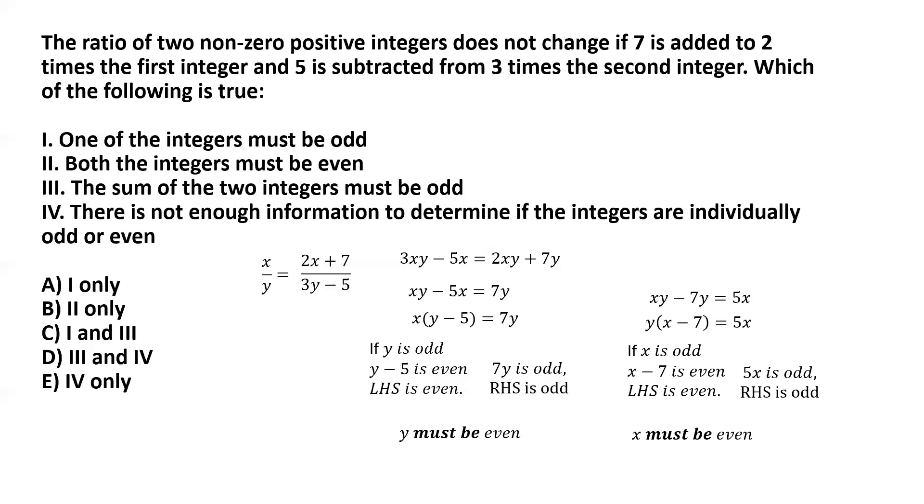The conclusion is that both integers x and y must be even numbers. So the correct option is option B, which states that only statement 2 is correct. X and y being both even, their sum must also be even, so we can reject statement 3, which states the sum must be odd. Going through all the statements, only statement 2 is correct. So the correct answer is option B.